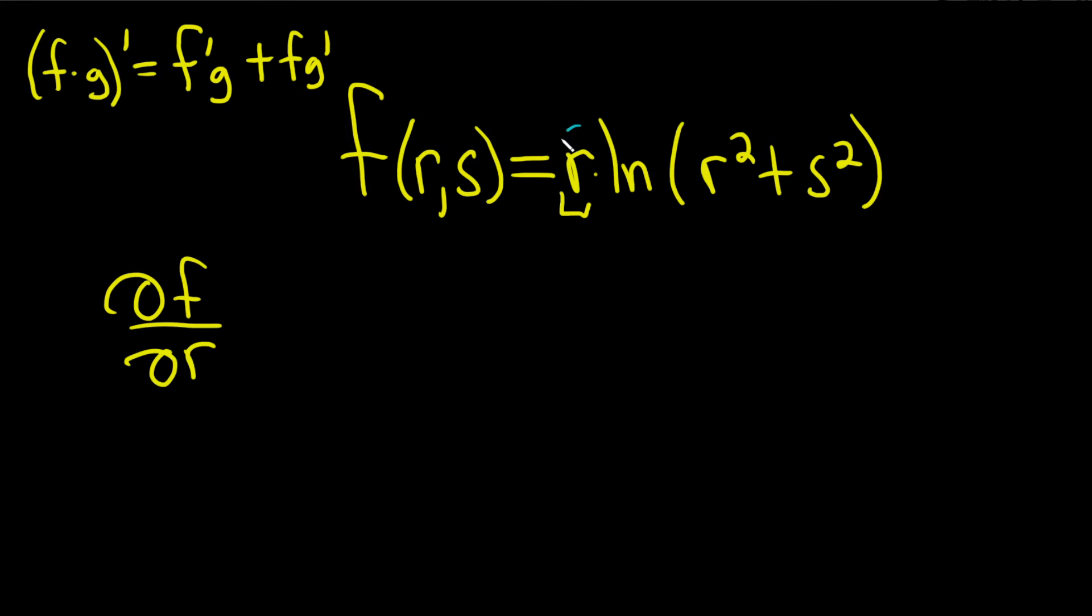So here, this is our first function, so it's r. Its derivative with respect to r is 1 times the second, so the natural log of r squared plus s squared, plus the first, which is just r, times the derivative of the second.